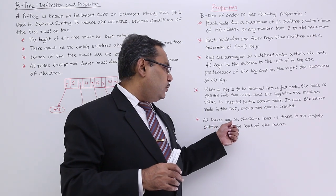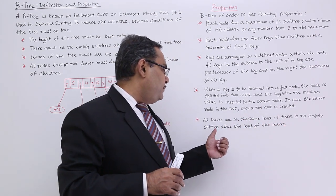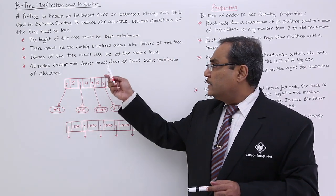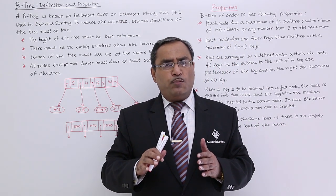All leaves are on the same level, I told you this one earlier. There is no empty subtree above the level of the leaves. That point we have discussed here. That means this is known as M-way tree.